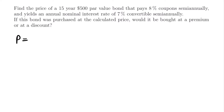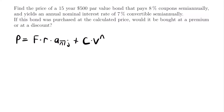The price of a bond is equal to the face value of the bond times the coupon rate times the formula for the present value of an annuity immediate — a-angle-n bracket j, where j is the yield rate for the bond — plus the redemption value C times the present value factor to the power of n using that yield rate j.